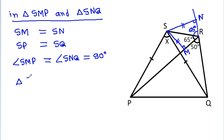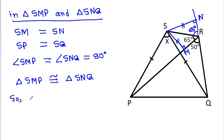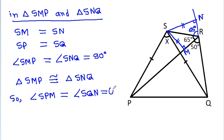So triangle SMP will be congruent to triangle SNQ. Therefore angle SPM will be equal to angle SQN — suppose this angle is theta. So this angle is theta and this angle is theta.